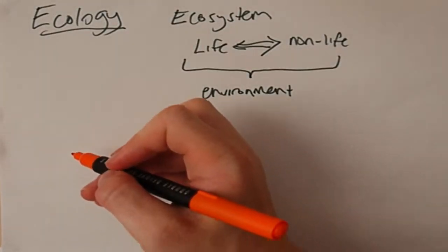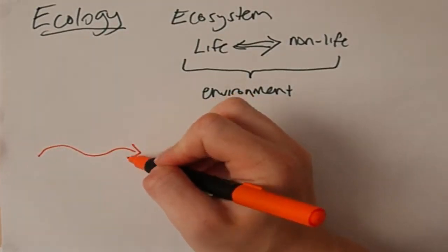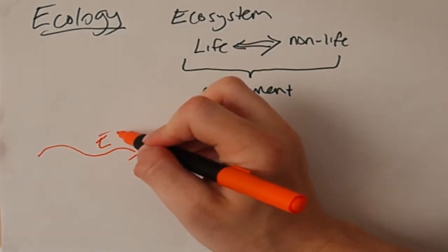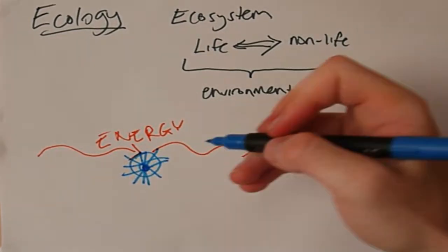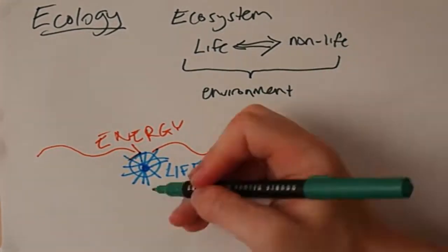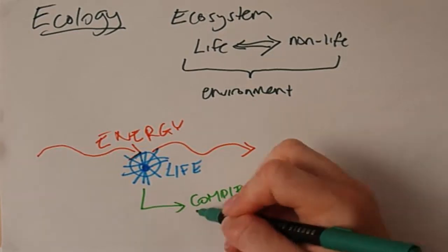The most important thing to understand about ecology is that all life relies on the flow of energy. Life uses the energy to build and maintain complexity. Therefore wherever you find a good enough source of energy you will probably find life.